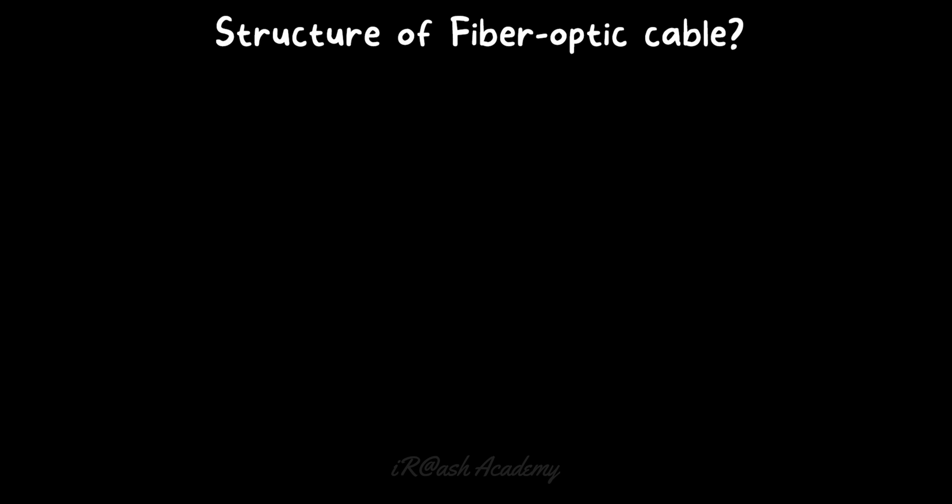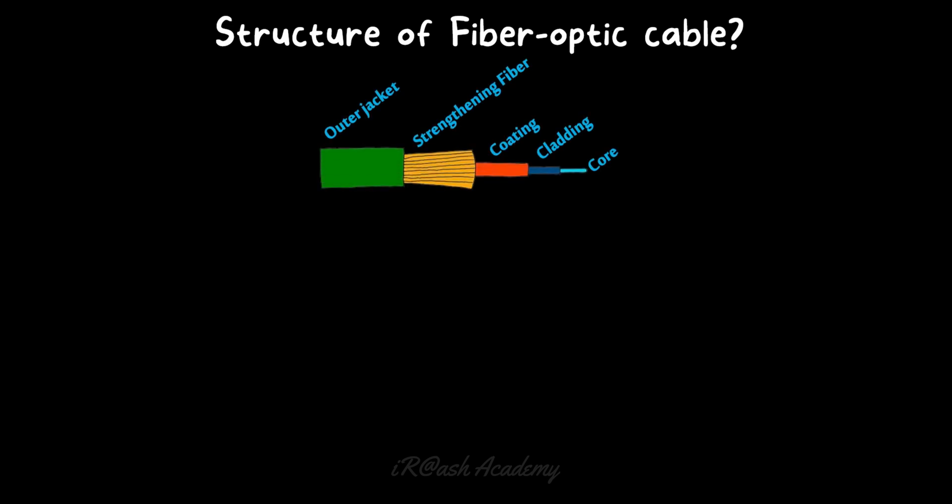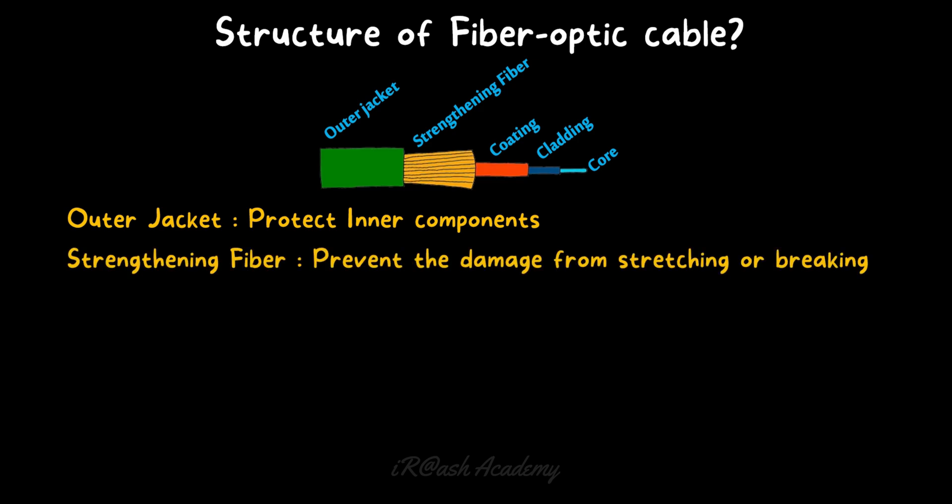Now let's discuss the structure of the fiber optic cable — what materials are inside it. Looking at a schematic diagram, we can see multiple parts. The first part is the outer jacket, which protects the inner components and is most commonly made of PVC or plastic. Inside the outer jacket is the strengthening fiber, whose function is to prevent damage to the fiber optic from stretching or breaking, since the cable may have bends and tension when being pulled.